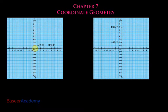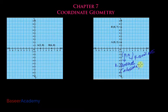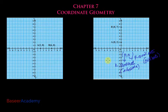The x-axis and y-axis intersect at a point known as the origin, represented by O. The coordinates of the origin are (0, 0). The first coordinate is the x-coordinate, also known as the abscissa, and the second coordinate is the y-coordinate, also known as the ordinate. Now in this video we'll learn how to find out the distance between two given points.